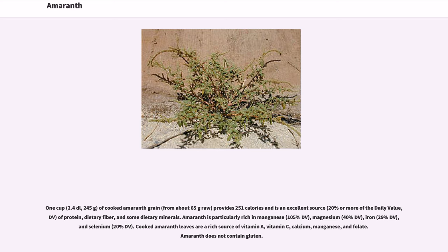One cup (245 grams) of cooked Amaranth grain provides 251 calories and is an excellent source — 20% or more of the daily value — of protein, dietary fiber, and some dietary minerals. Amaranth is particularly rich in manganese (105% DV), magnesium (40% DV), iron (29% DV), and selenium (20% DV).